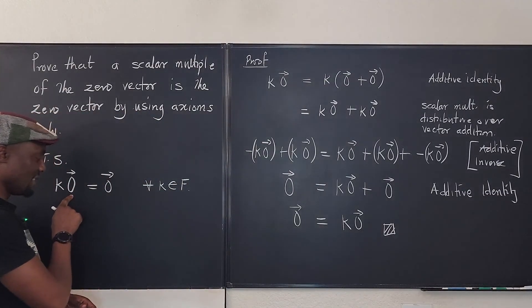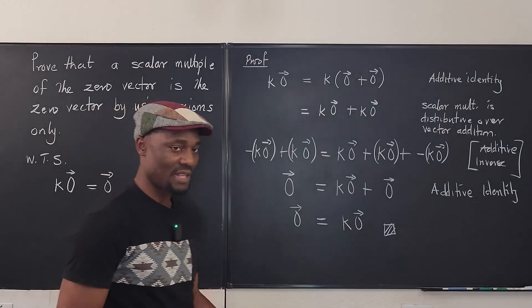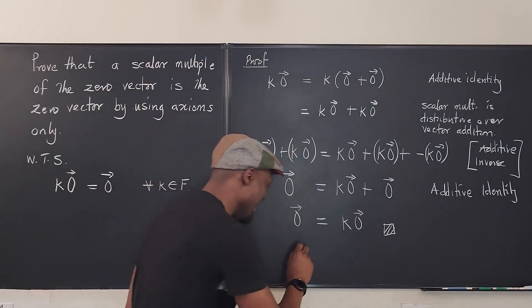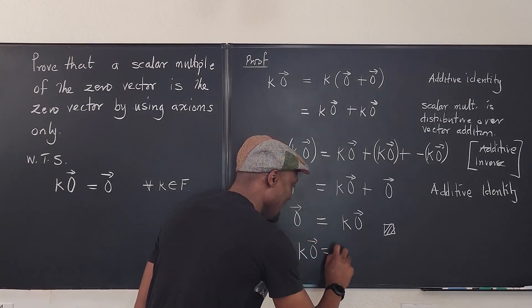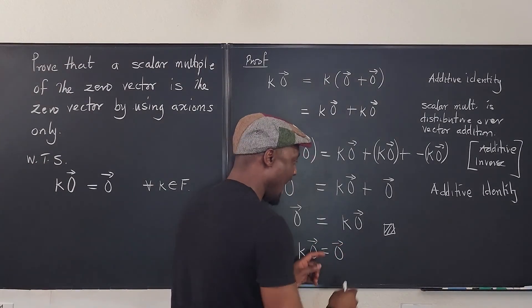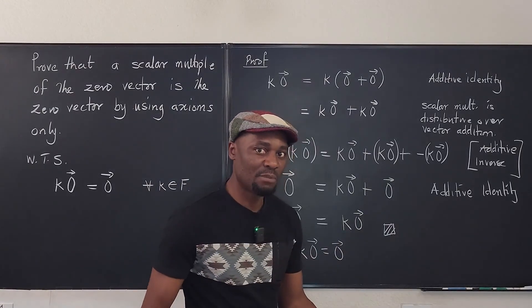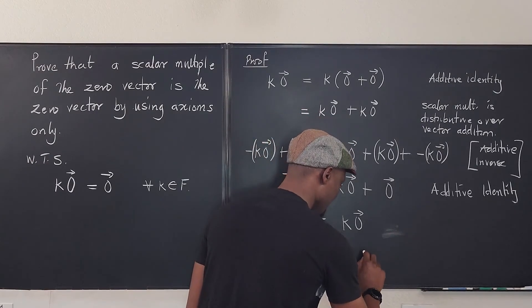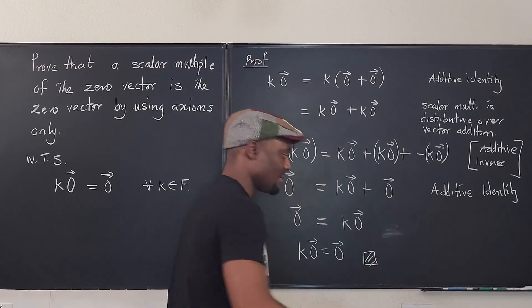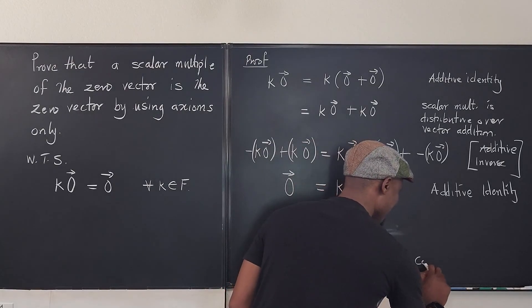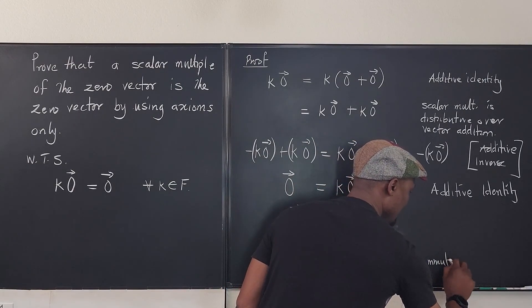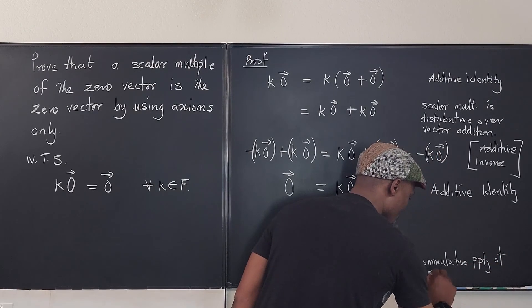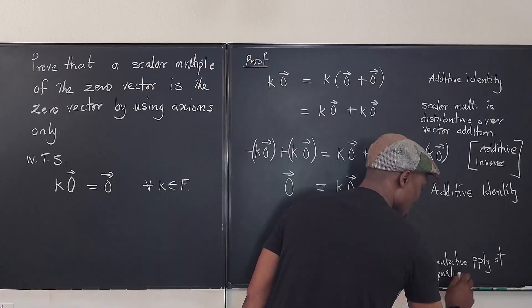We've shown that k times the zero vector is equal to the zero vector. If you want to rewrite it so it reads in the conventional direction, that is by the commutative property of equality: k·0⃗ = 0⃗.